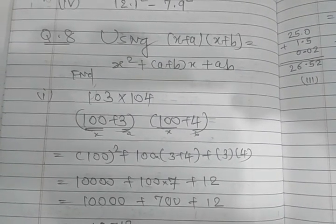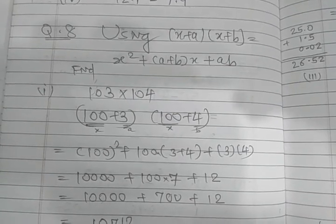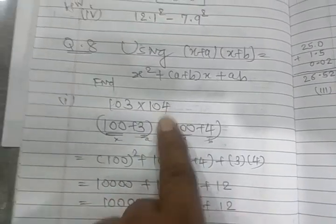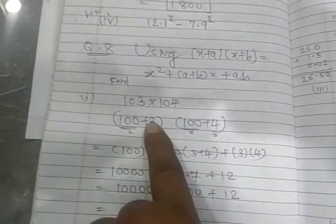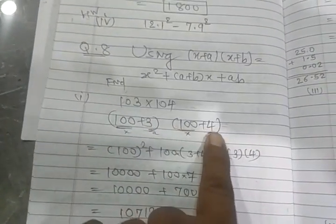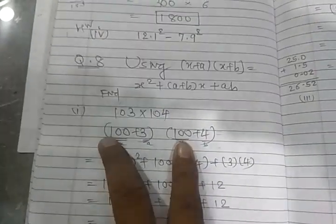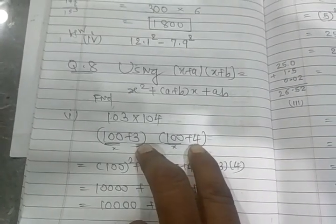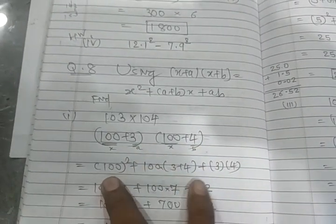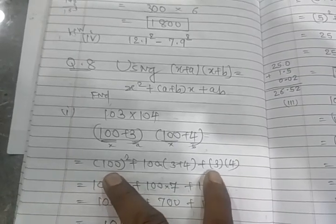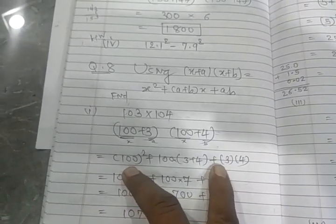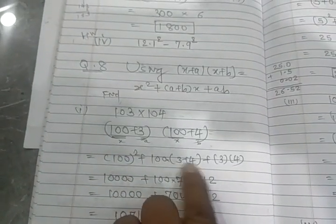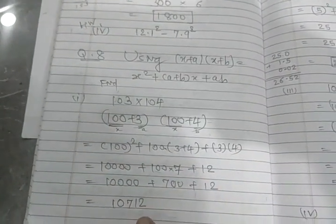Now question number eight, using x plus a times x plus b is equal to x square plus a plus b into x plus ab identities, find the following. Now yeh dhekho, 103 multiplied by 104. So yaha kya karenge? 100 plus 3 into 100 plus 4. Dhekho yahan 100, 100 same hai, means x will be same, a and b, a is 3 and b is 4. So you can apply this identity. So x square means 100, x means 100, 3 plus 4, 3 into 4, then simplify.